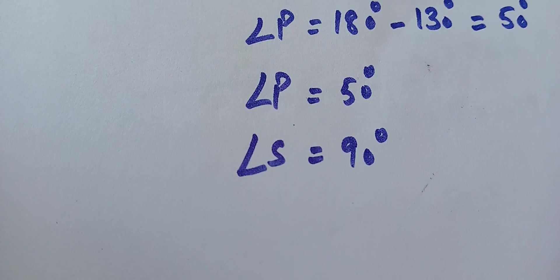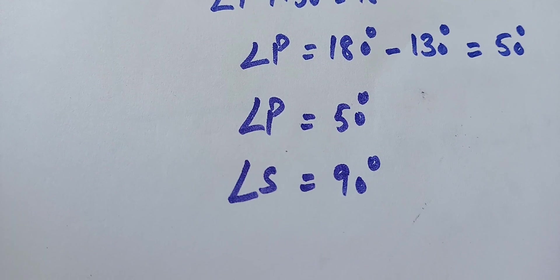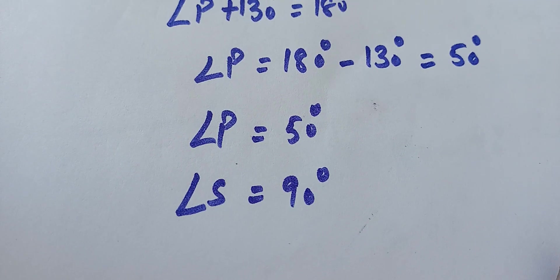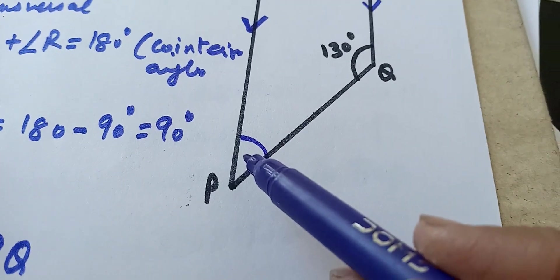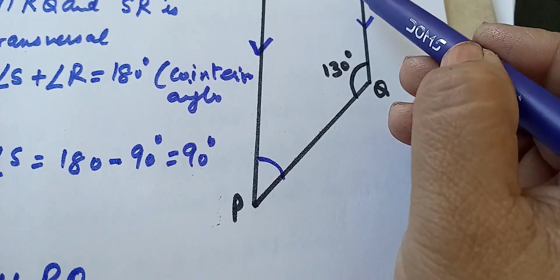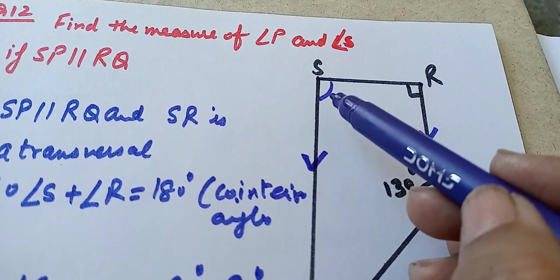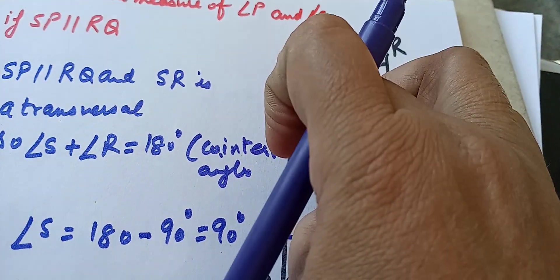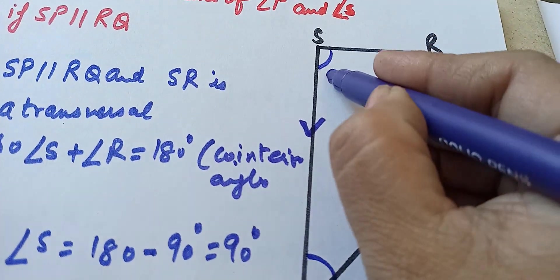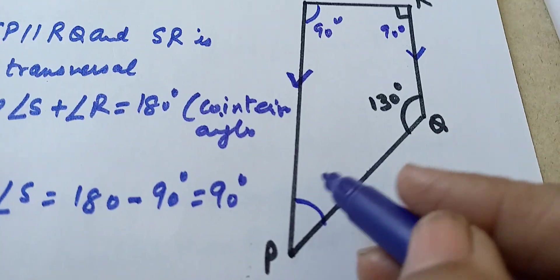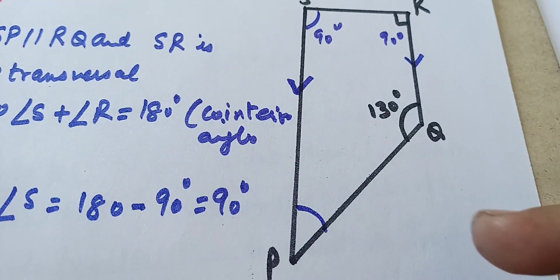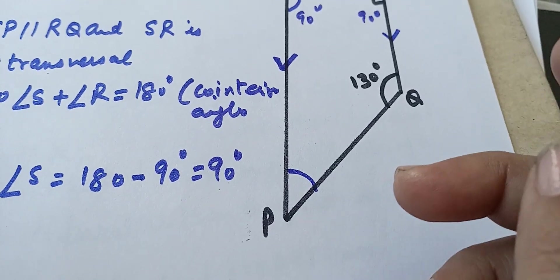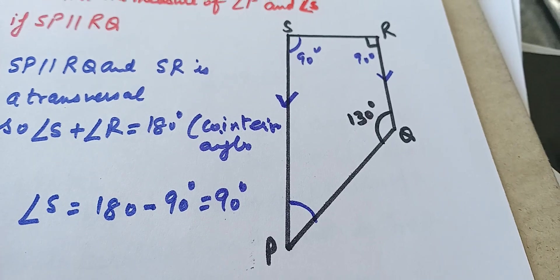Now the question also asks: is there more than one method to find out angle P? Yes, we can use the angle sum property of a quadrilateral. Since we have three angles — 90, 90, and 130 degrees — we can find angle P using the angle sum property of a quadrilateral. So children, complete exercise 3.3. Thank you and have a nice day.